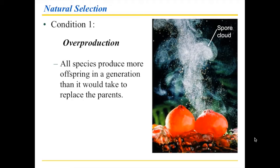If you are considering sexual reproduction, it takes two individuals — a male and a female. If they produce offspring, as long as they produce two, then they would replace themselves. But in all species, over the reproductive life of these individuals, they tend to produce more offspring — in some cases, a lot more.